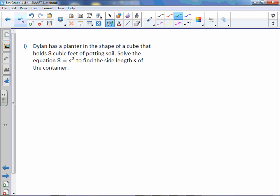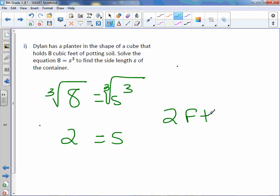Let's solve some equations. Dylan has a planter in the shape of a cube that holds 8 cubic feet of potting soil. Solve the equation 8 equals s cubed to find the side length s of the container. So to get rid of a cube, we cube root it. Make sure you put that 3 above your square root. So it's like a square root symbol, only it has the extra 3 there. Type it in your calculator. You get 2 equals s. And we are talking about feet. So each side length is 2 feet.